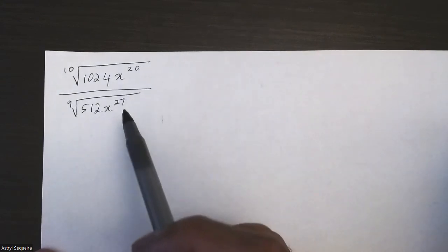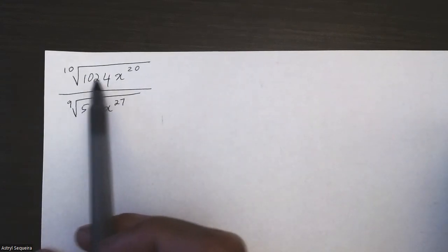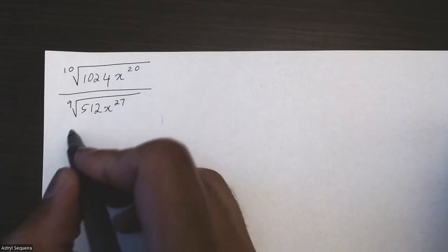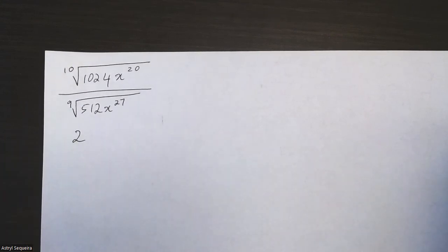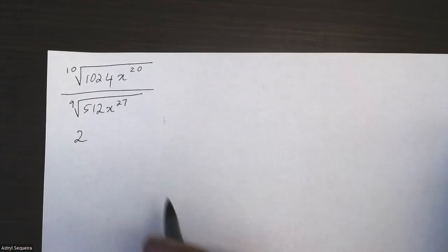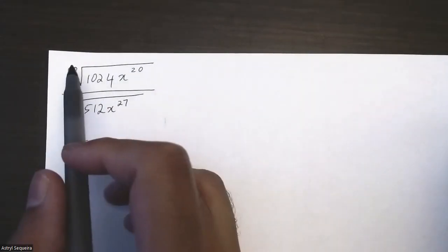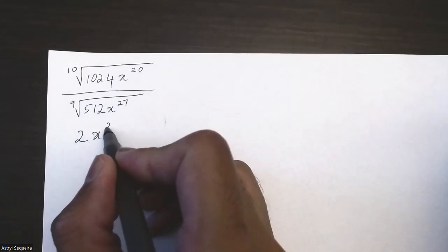And last question here: 10th root of 1024 is just 2—you can do that in the calculator. I'll double check it, but the only possibility is probably 2 for a whole number at least. And then 20 divided by 10 is just 2.